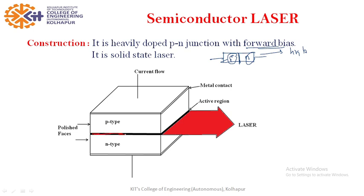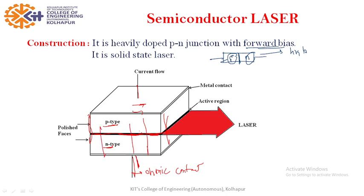This is the junction. This is P-type semiconductor and this is N-type. This junction is in the horizontal plane. This is the top surface and this is the bottom surface. The top and bottom surfaces are metallized to give an ohmic contact, meaning we can connect it in the external circuit. The front side and back side are polished parallel to each other and perpendicular to the junction. The remaining faces are kept rough because we don't want any emission in those regions.